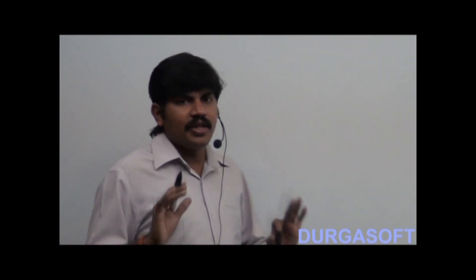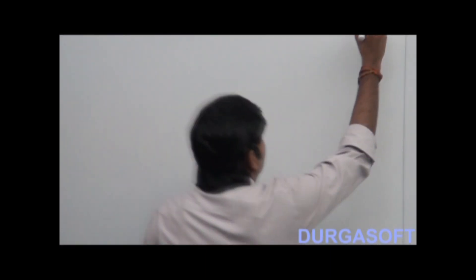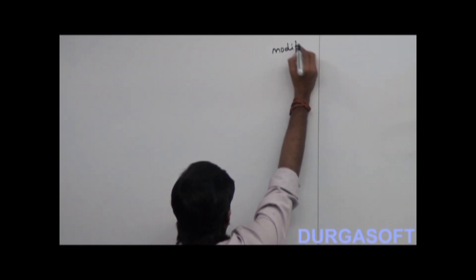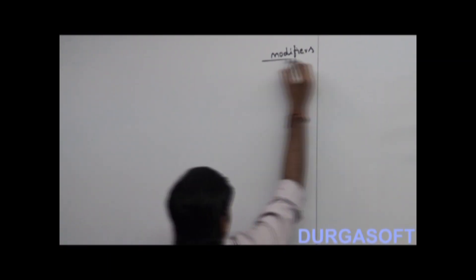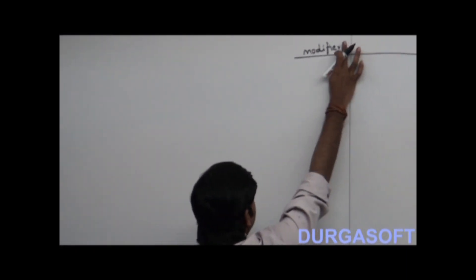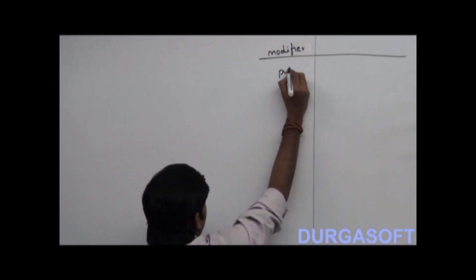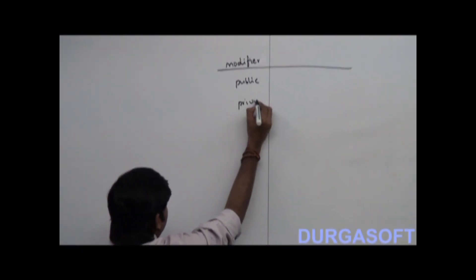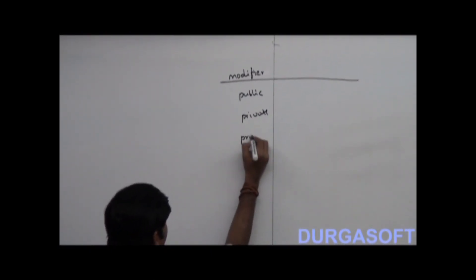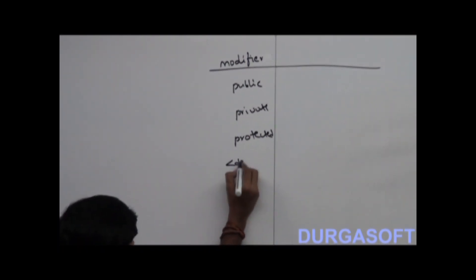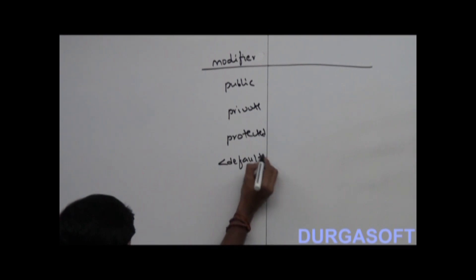Just listen carefully. What are the various modifiers available in Java? Let me list out the modifiers first. The first one: public. Next, private. Next, protected. And then, default.